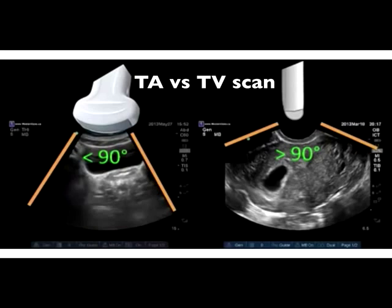One can easily identify a transabdominal scan versus a transvaginal scan by looking at the ultrasound image. If the image is less than 90 degrees, this is from a transabdominal scan, which you can see on the left side of the screen. If the angle is greater than 90 degrees, like the right side of the screen, this is from a transvaginal ultrasound.